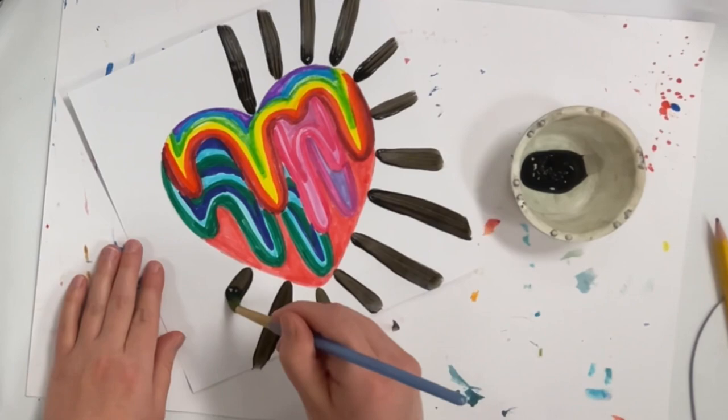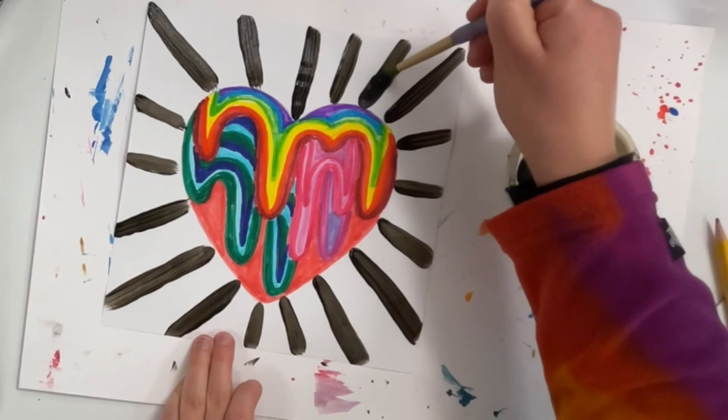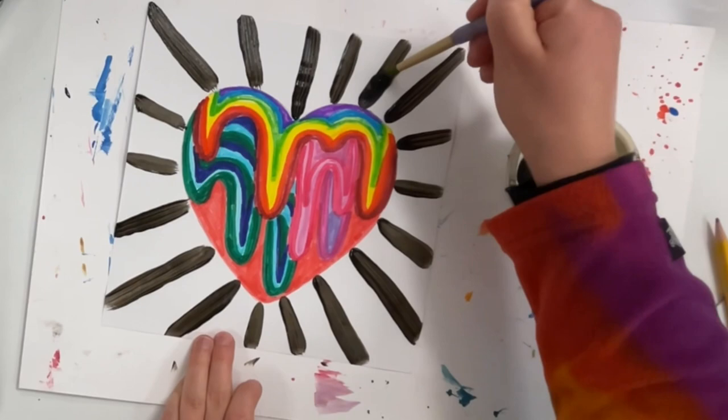Just make sure your radiating lines are as neat and clean as you can make them. And if you want to, you can also make a black outline around your heart like I'm doing. This part is optional, meaning you don't have to do it. If you just want to do the radiating lines, that's okay too. Remember to take your time and do your best.